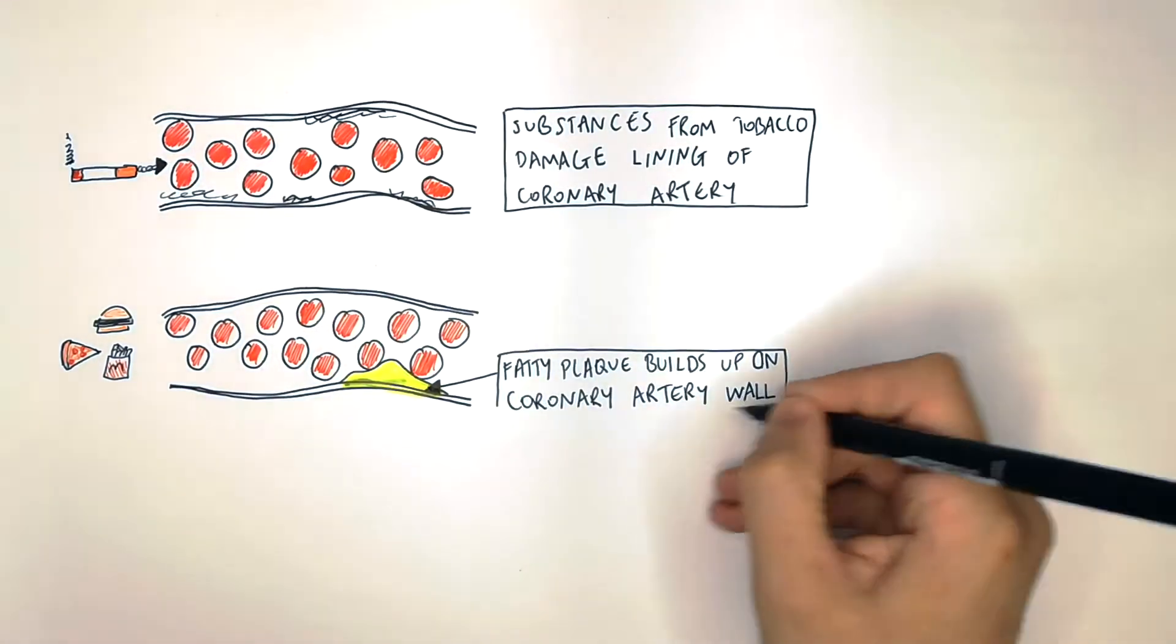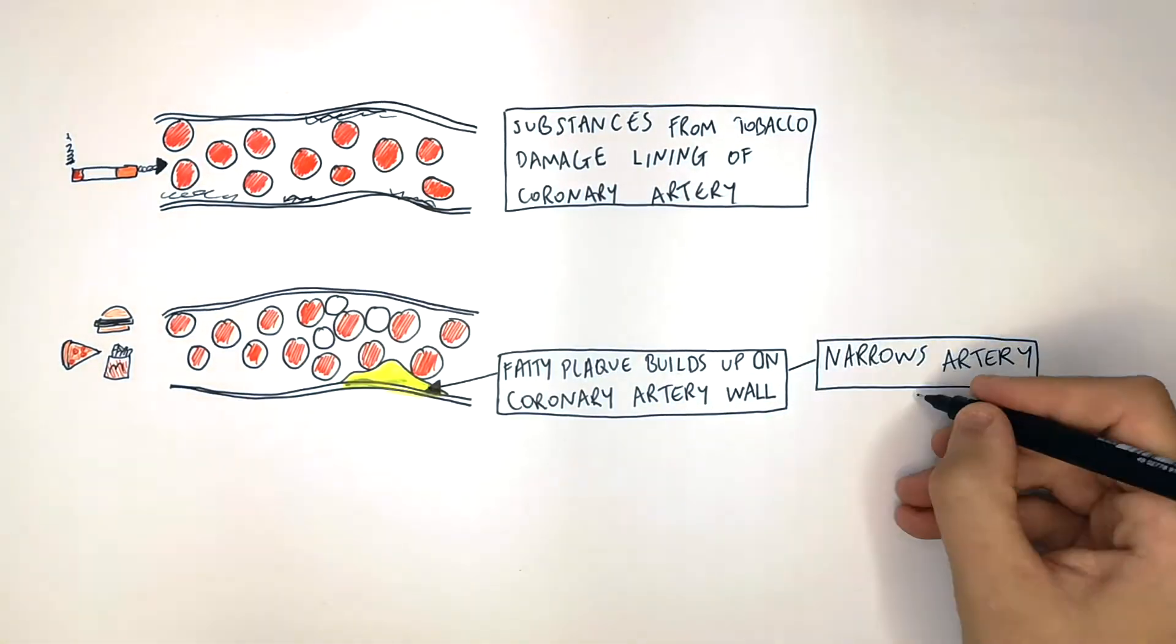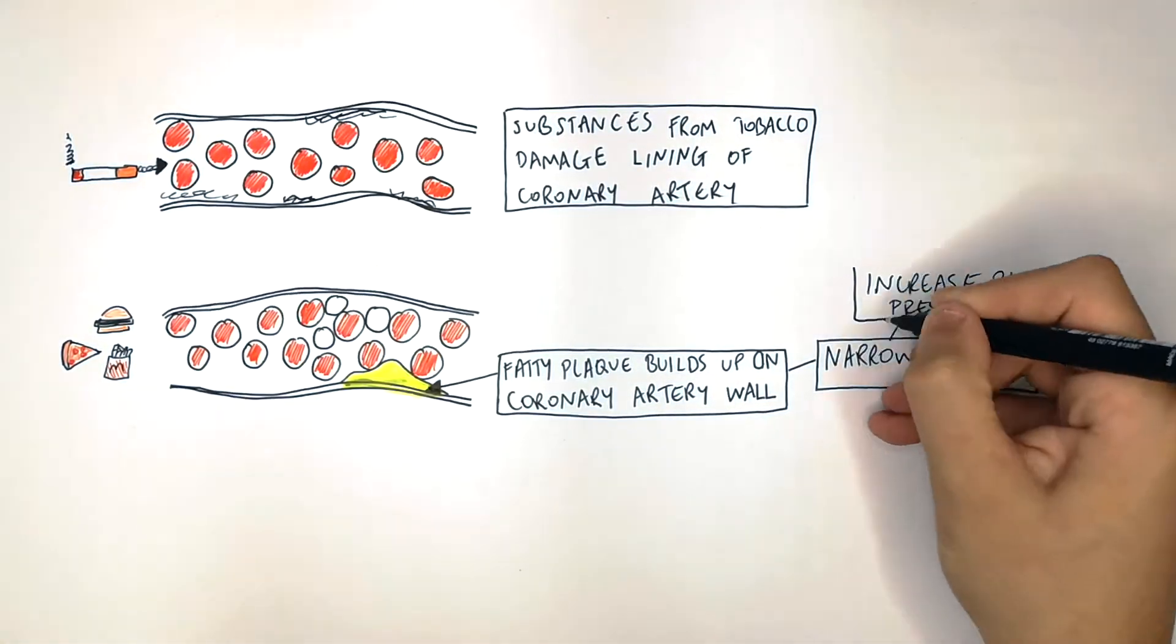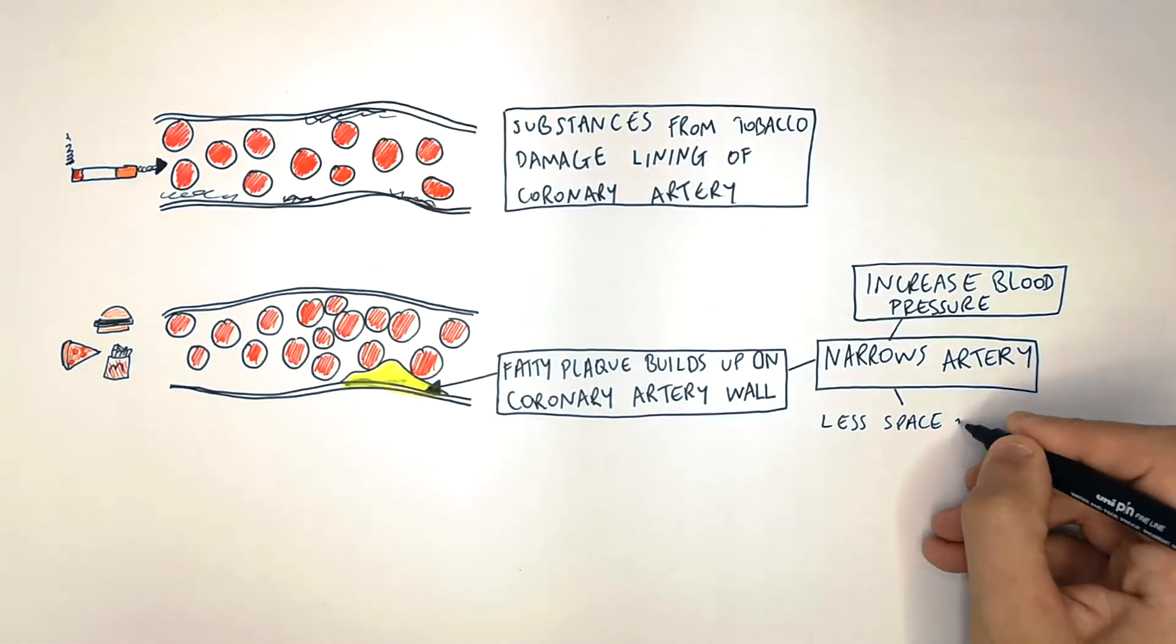The fatty plaque builds up on the coronary artery wall. What this does is it narrows the artery, as you can see here, which increases the blood pressure. This also produces less space for the blood to flow in the coronary artery.